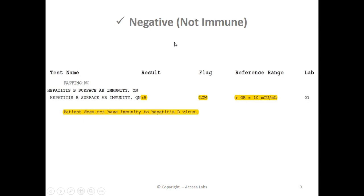Now let's take a look at a negative result. Once again, we will look for the numerical result under the result heading. This report has a result of less than 5. You might also notice the low notation under the flag header. Based on Quest Diagnostics Result Index, any result less than 10 milli-international units per milliliter is negative, which means that a person with this result does not have immunity to the hepatitis B virus.